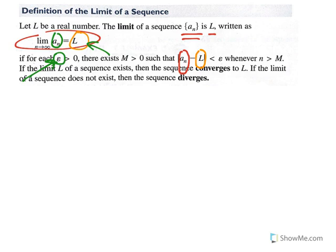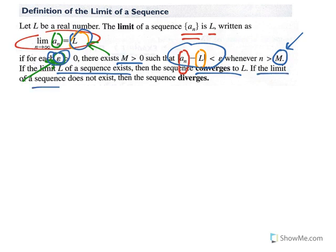You can choose any number for epsilon. If you can find a term number M such that any term after M will be closer to L than your chosen epsilon, then the limit exists. If the limit L of the sequence exists, we say the sequence converges to L. If the limit does not exist, we say the sequence diverges.